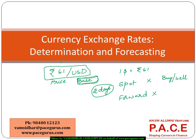In a forward market, the buying or selling of currencies happens at a future date — for example, a 30-day, 60-day, or 90-day forward rate. The actual transaction does not happen today, but the price at which the currency will be bought or sold is decided today. This is typical of any derivative-based market.